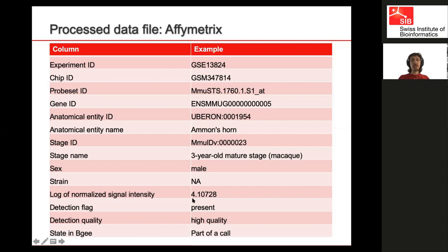We also have the sex, the strain, and the intensity — we provide the log of normalized intensity, which is what is actually useful for Affymetrix. We also provide how this is integrated into BGee: whether we detect present or absent, high quality or low quality. This allows you to go back to BGee and verify your results are consistent with what we show. But primarily, what you're really going to want to use is the gene, the anatomical structure, the stage, sex and strain, and the log of normalized intensity.